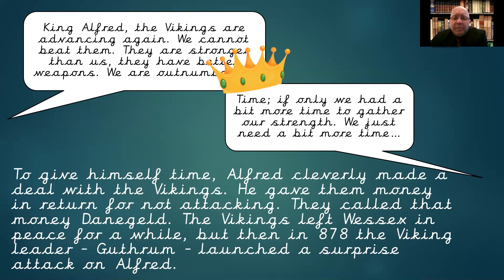To give himself time, Alfred cleverly made a deal with the Vikings — he gave them money in return for not attacking. They call this money Danegeld. The Vikings left Wessex in peace for a while, but then in 878 AD, the Viking leader Guthrum launched a surprise attack on Alfred. The Danegeld had given them some time to start to prepare for battle, but because of the surprise attack they still weren't quite ready. Guthrum attacked before Alfred was completely prepared.